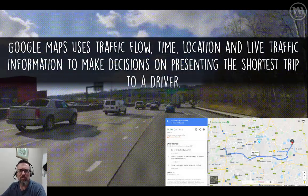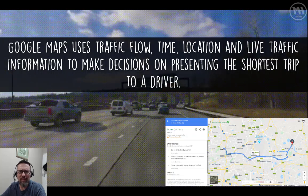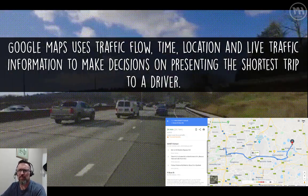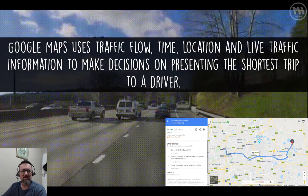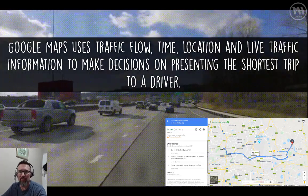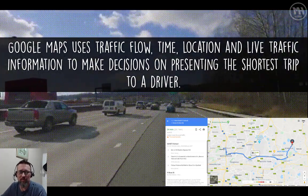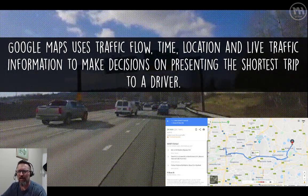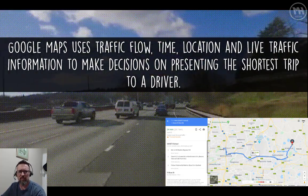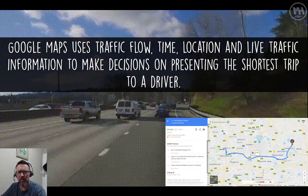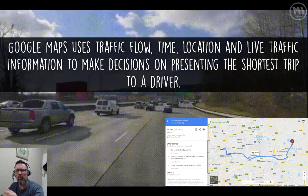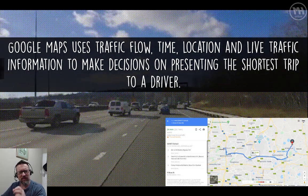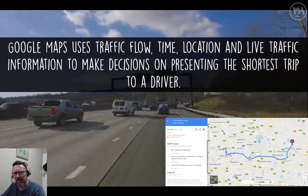As an example, if you use Google Maps for driving around and you're using it as your sat nav, Google Maps will make use of things like traffic flow, time, location, and live traffic information from databases or live servers to make decisions — to give you either the shortest trip or the fastest trip depending on where you're going. That is one way that Google Maps uses algorithms.